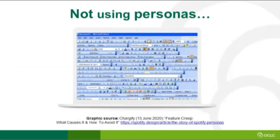What happens when you don't use the persona? When you don't use the persona, we get what's called scope creep or feature creep, where we start to try and build for everybody. This Photoshop exaggeration shows someone wanted a strikethrough button, someone wanted a bold button, and so on - you end up losing the forest for the trees.